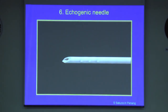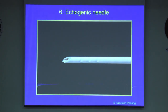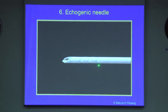The popularity of ultrasound-guided regional anesthesia has increased. Many instrument companies have come up with solutions to overcome the problem. These include echogenic needles. Echogenic needles use special coatings or corner reflectors to increase the reflection of ultrasound back to the transducer.